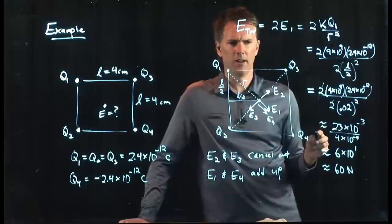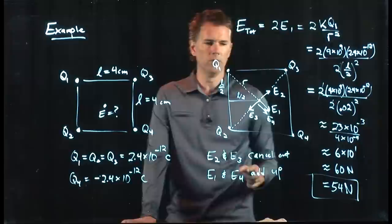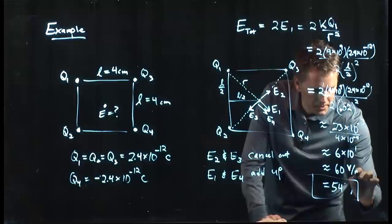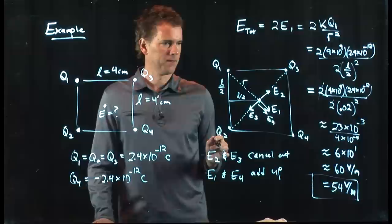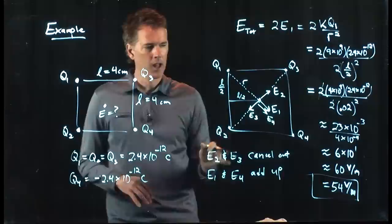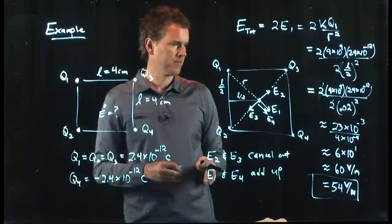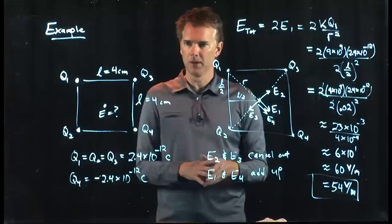The result is approximately 54 volts per meter — that's the electric field at the center. Note: the units are volts per meter, not newtons, because we're calculating electric field. We took advantage of superposition: two of the fields canceled and the other two doubled, greatly simplifying the problem. If that's not clear, definitely come see me in office hours.